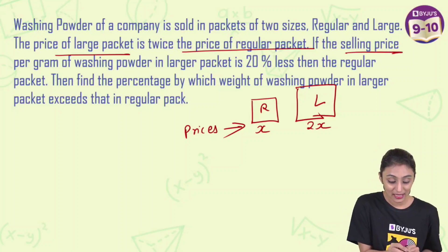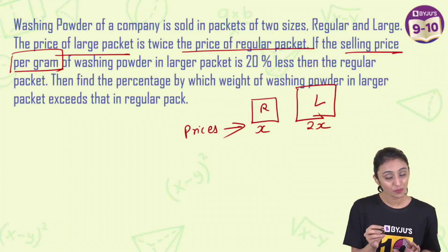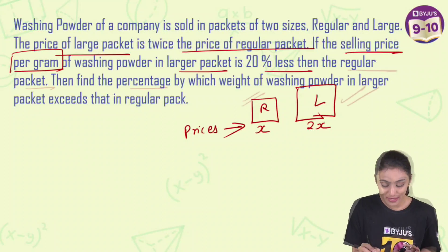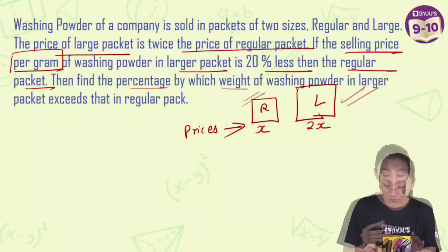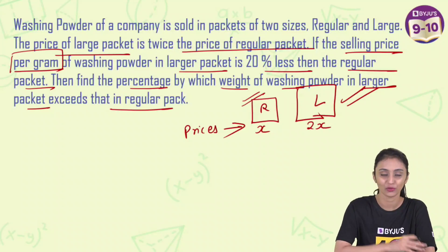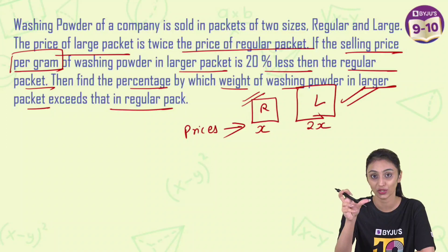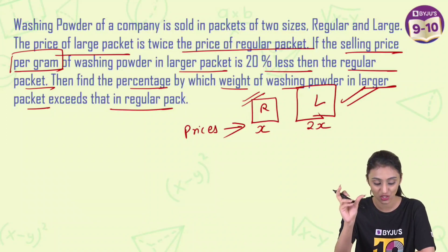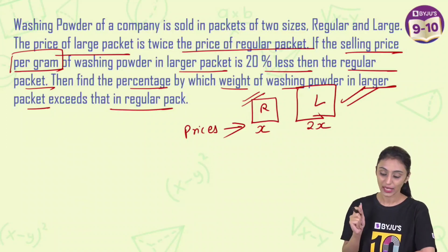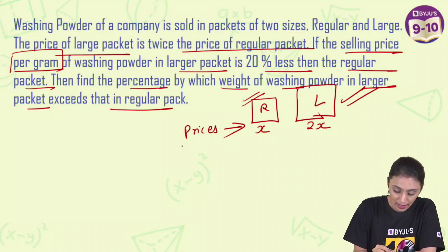Now it says the selling price per gram of washing powder in the larger packet is 20 percent less than that in the regular pack. We have to find out the percentage by which the weight exceeds in the larger one compared to the regular one.